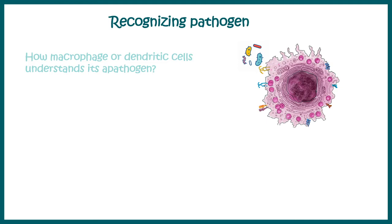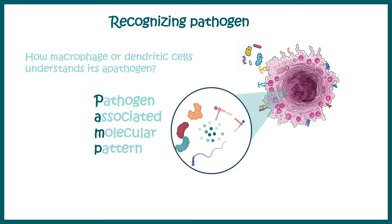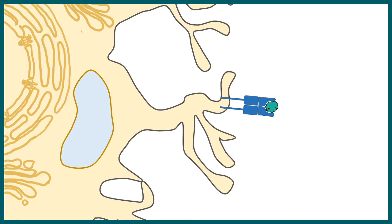Recognition is done by specific receptors present on macrophages, dendritic cells, or even B cells. These cell types determine something known as PAMP — pathogen associated molecular pattern. In simple words, these are molecular signatures of the pathogen which are determined by receptors present on macrophages or dendritic cells. Here we are looking at a dendritic cell which is displaying a pathogen-derived antigen on a class 2 MHC molecule.